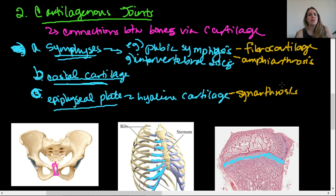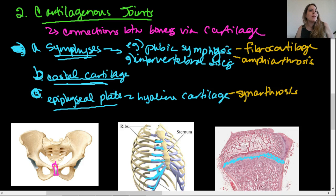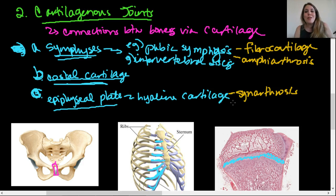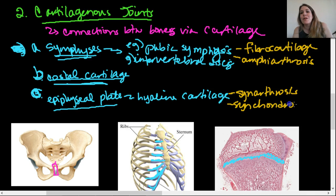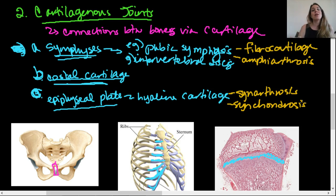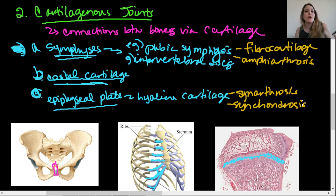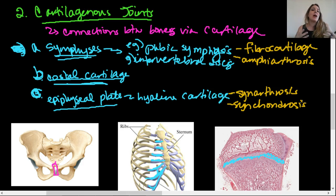So the epiphyseal plate is both a synarthrosis and a synchondrosis. To summarize cartilaginous joints: symphyses like the pubic symphysis and intervertebral discs (fibrocartilage, amphiarthrosis); costal cartilage joining ribs to sternum; and the epiphyseal plate (hyaline cartilage, synarthrosis/synchondrosis).